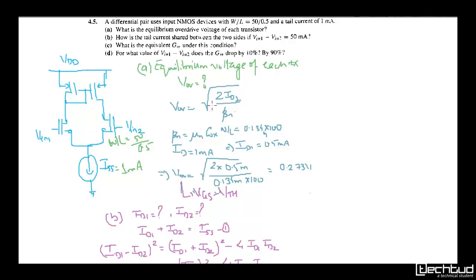The overdrive voltage formula is VOV = sqrt(2*ID/β). For all problems we are taking μn*Cox as 0.134 mA per volt square and W/L ratio is 100. ID is 0.5mA for each transistor. So this becomes sqrt(2 × 0.5)/(0.234 mA × 100), which comes out to 0.273 volts. This is the overdrive voltage.